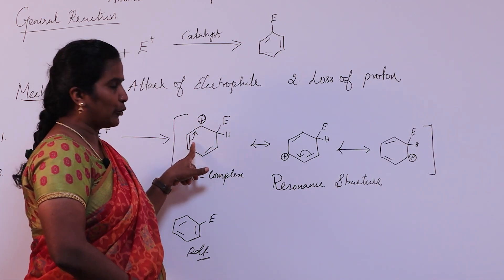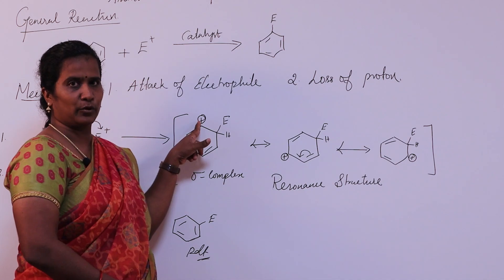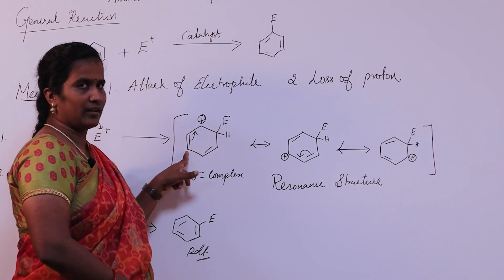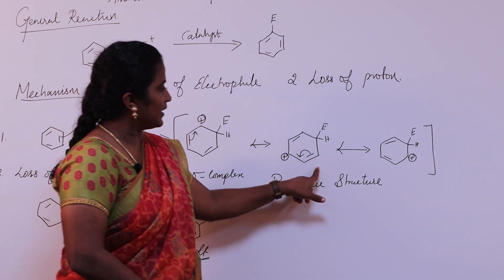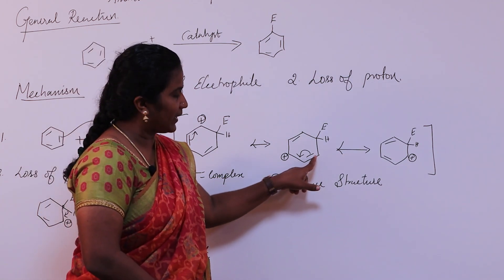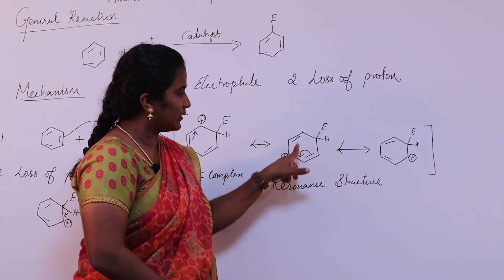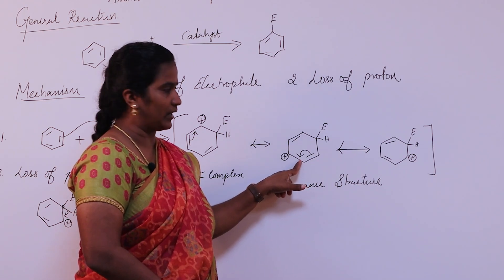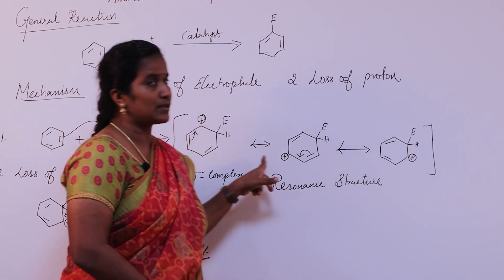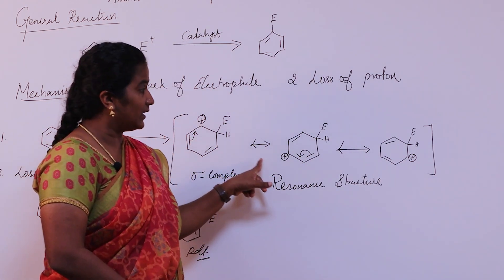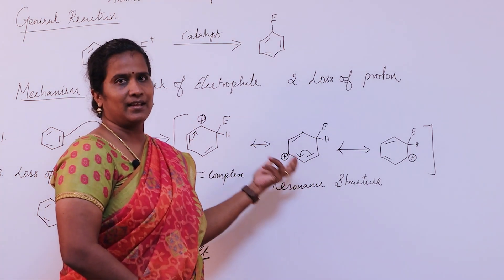The carbocation is formed, then the pi electrons shift over to this carbocation, forming a new carbocation. In the second step, another pi bond shifts, generating a carbocation at another position. This is the slow step, where aromaticity is lost.